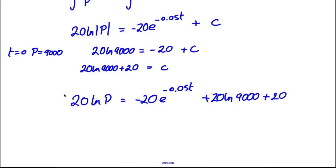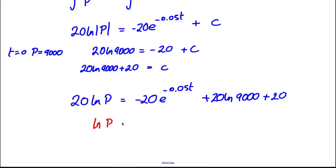Now if we're clever we can divide both sides by 20 just to tidy everything up. So therefore ln P is going to be equal to negative e to the negative 0.05T plus ln 9000 plus 1.